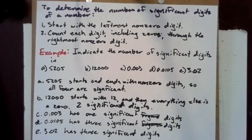Here we'll indicate the number of significant digits in five different numbers. 5,205 starts and ends with non-zero digits, so all four are significant.